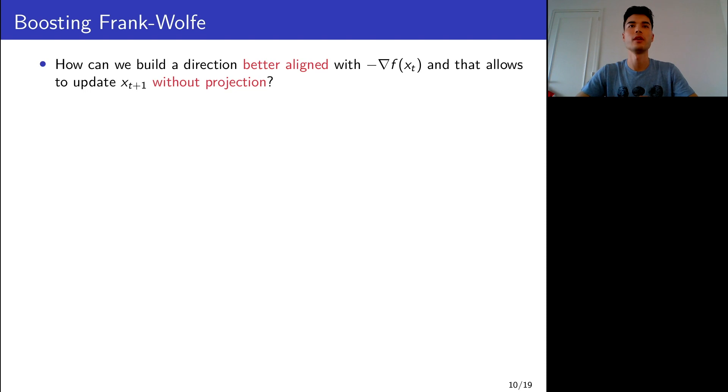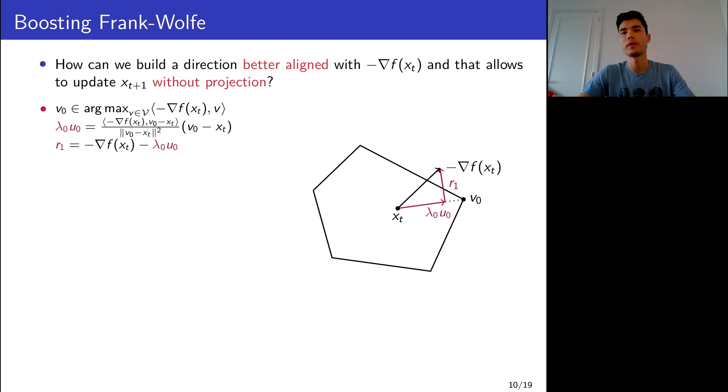So this is the question: can we build a direction that is better aligned with the negative gradient, and that allows to update x_{t+1} without projections? Consider the following drawing, which led to this boosting idea, actually. You start with Frank-Wolfe. Frank-Wolfe gives you this v₀ vertex from the linear minimization of the gradient. You have λ₀u₀, which is the projection of the gradient onto the line, and the residual is r₁.